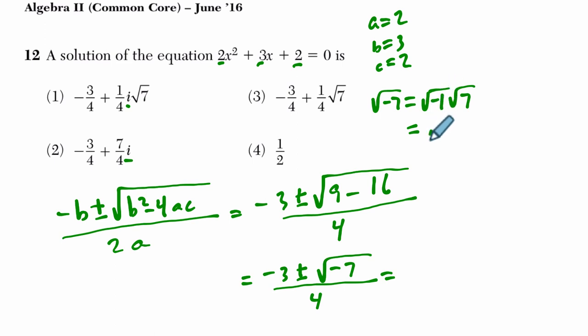And the square root of negative 1 is just i, and the square root of 7 can't be broken down any further.